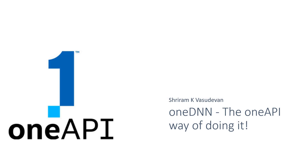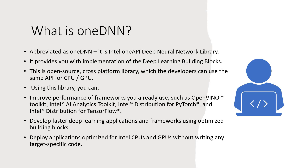Today we are going to discuss oneDNN and I will also let you know how to set things up in the DevCloud so you can start building oneDNN projects. We need to know what exactly oneDNN is — it is nothing but Intel oneAPI Deep Neural Networking Library and it provides you with the implementation of deep learning building blocks. This is an open source, cross-platform library and developers have a free hand to use the APIs for the CPU and the GPU.